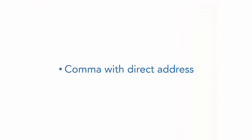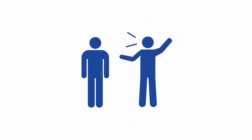Comma with direct address. This is an easy one. When you're addressing someone or your narrator or character is speaking to someone, just put a comma after their name or before their name. Here are a couple examples.